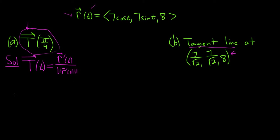Now we're ready to take the derivative. The derivative of cosine is negative sine, so this will be negative 7 sin(t). And then the derivative of sine is cosine, so this will be 7 cos(t).